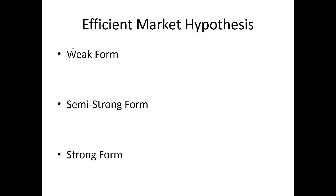There are three forms of what's called the efficient market hypothesis. The weak form says that stock prices only reflect historic information — you can't beat the market by looking at charts and graphs because all historic price movements have already been priced into the stock. The semi-strong form says that the returns we see in the marketplace reflect all publicly available information.